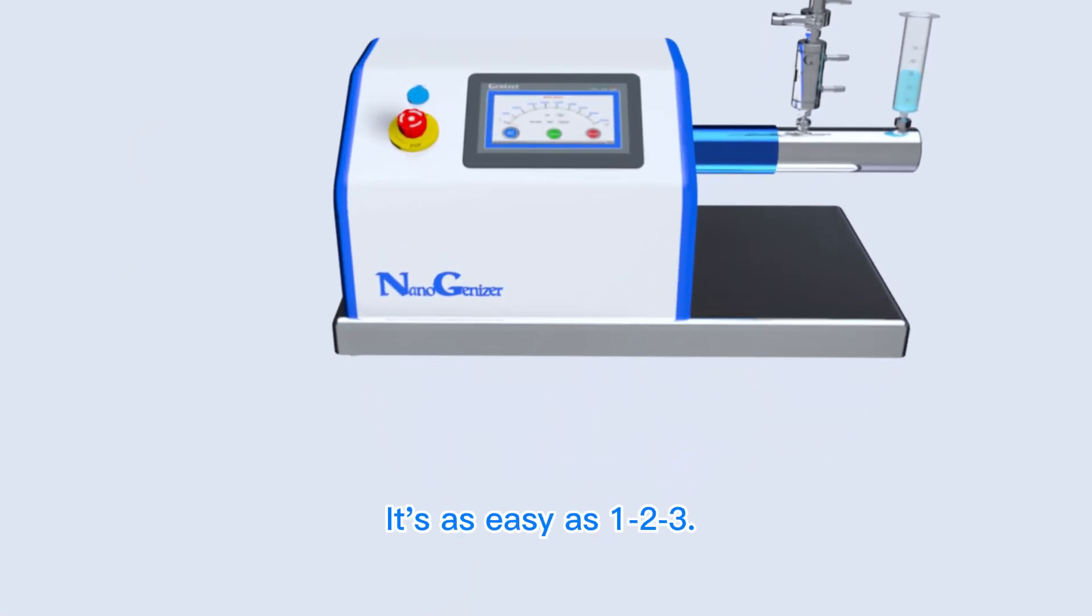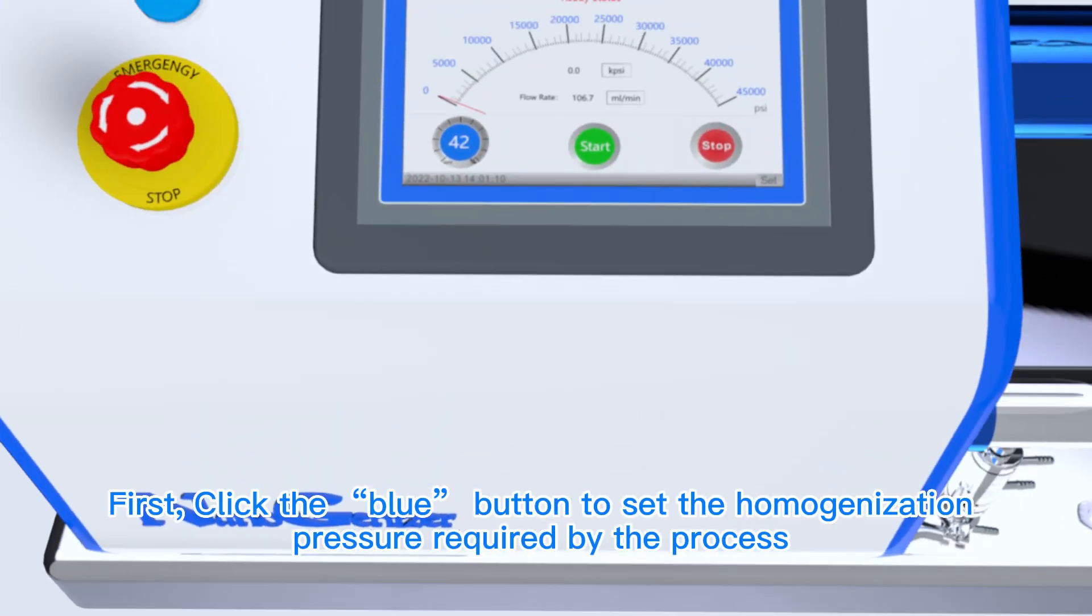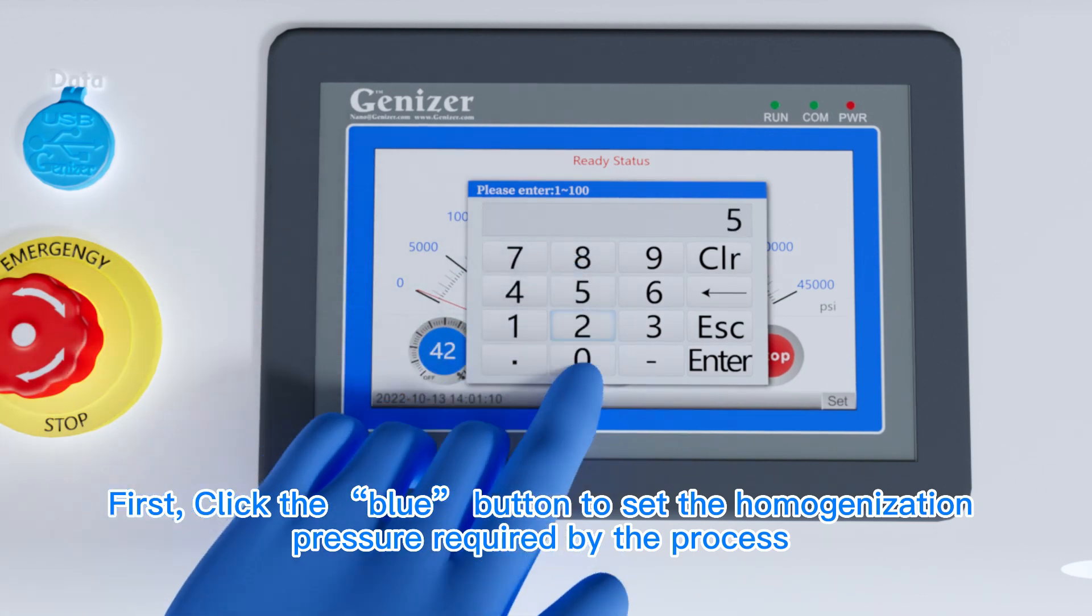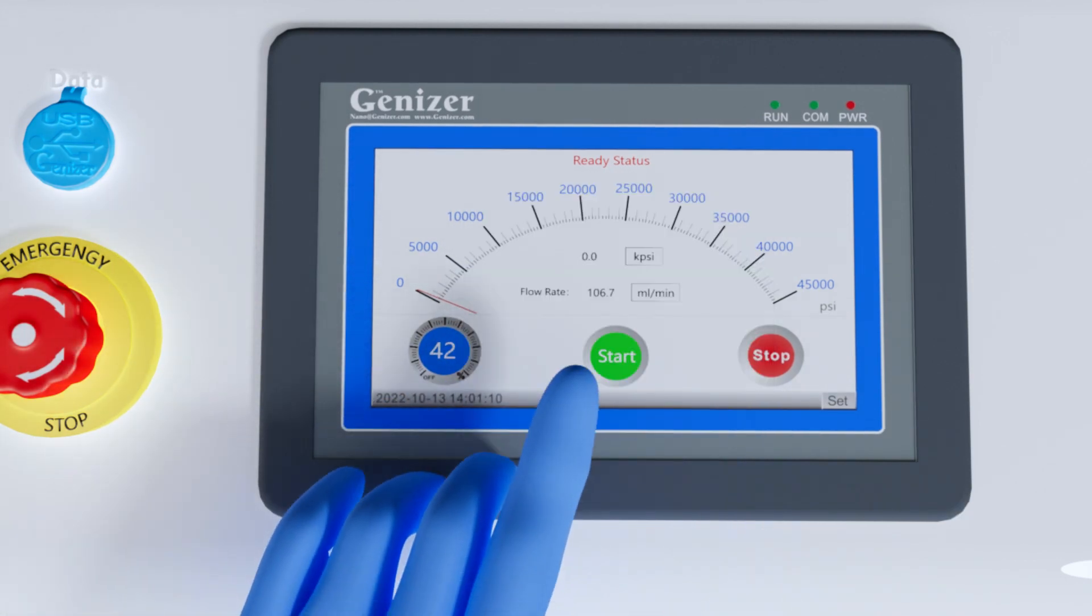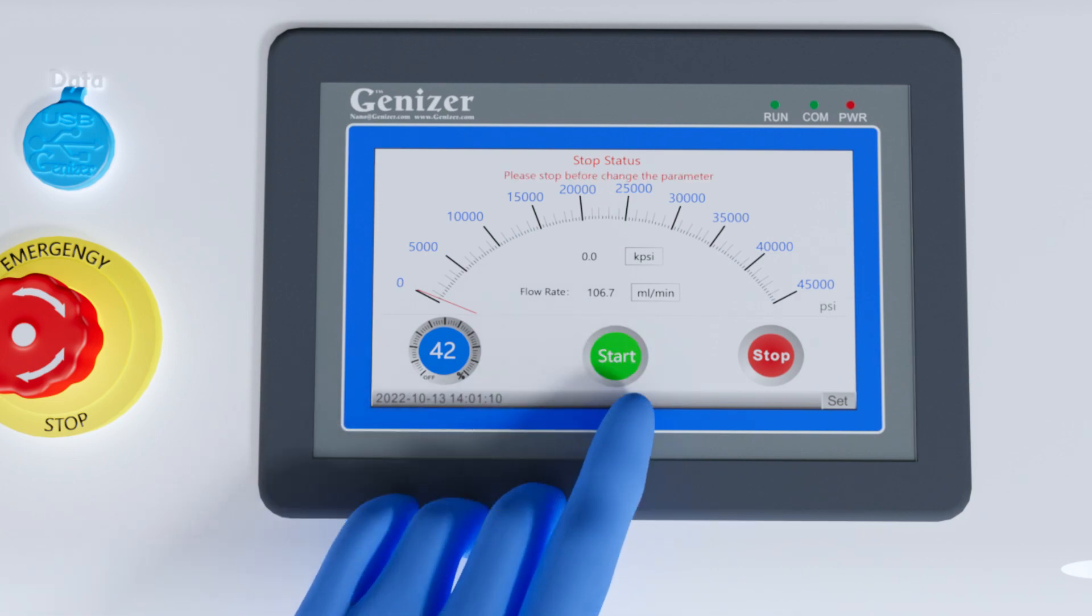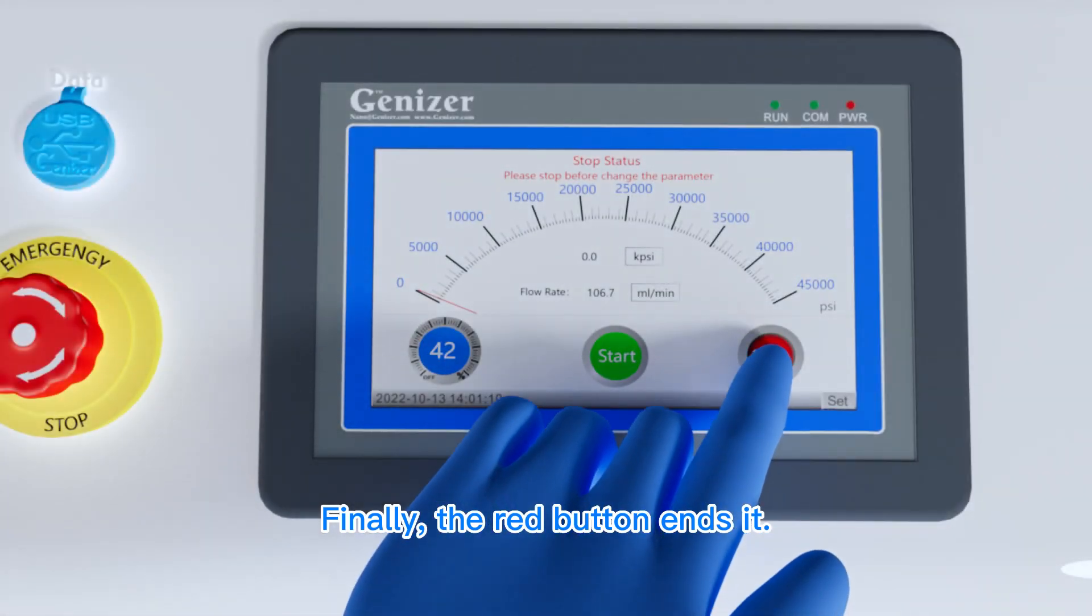Now let's see it in action. It's as easy as 1, 2, 3. First, click the blue button to set the homogenization pressure required by the process. Then the green button starts the process. Finally, the red button ends it.